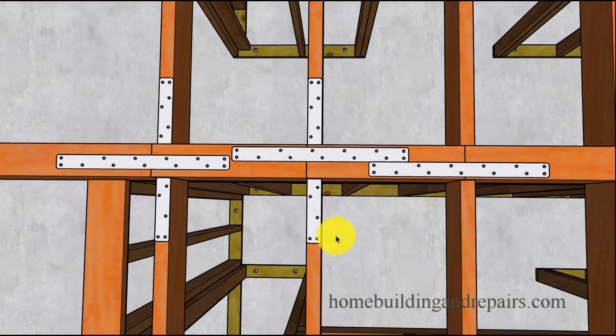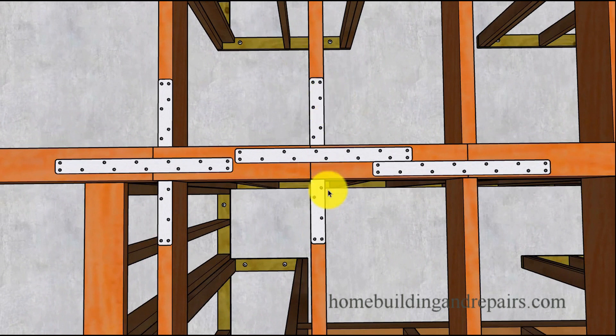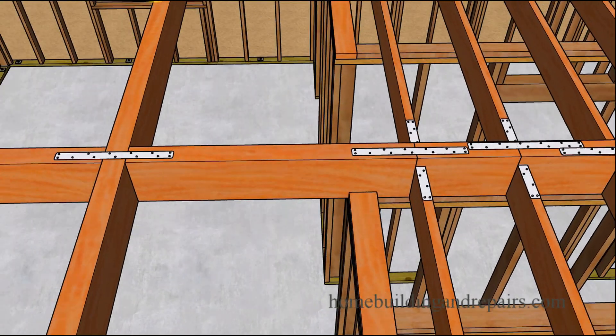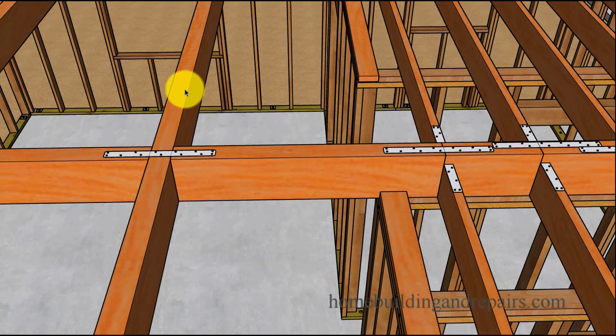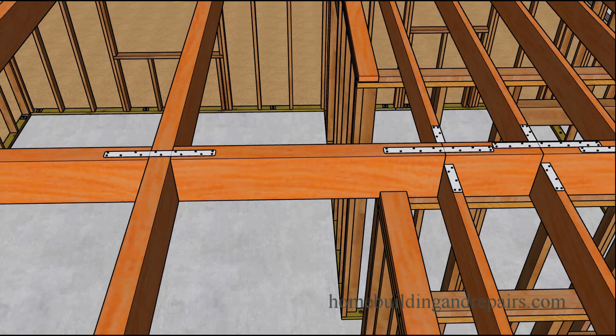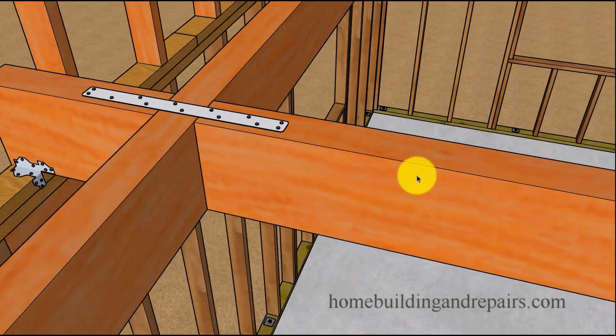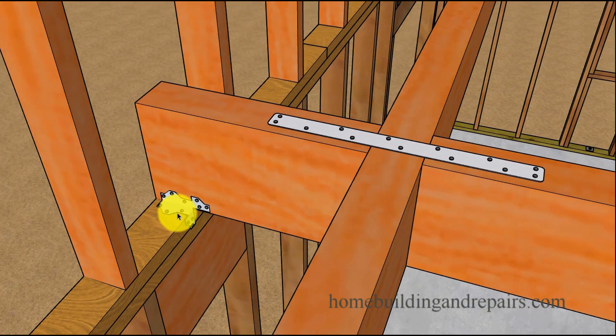Remember, the ties need to be every 4 foot on center. So you wouldn't need it like this necessarily. You would just need a strap every 4 foot, which is what we're doing with the beams. So here we have the beams going across and then some type of blocking to create a solid connection all the way over to the wall.